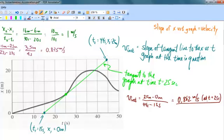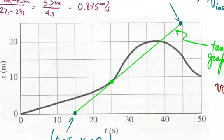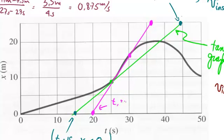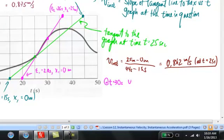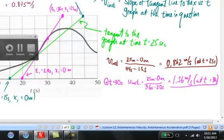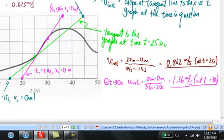For the instantaneous velocity at t equals 30 seconds, I go to the graph, sketch a tangent line, and go through the same calculation process. The slope of the graph looks steeper at this point. At time 20 seconds the position is 0 meters, and at time 36 seconds the position is 25 meters. Feeding those numbers into the slope formula, I get that the instantaneous velocity at t equals 30 seconds is 1.56 meters per second.